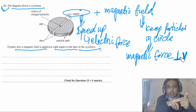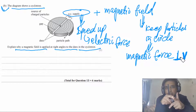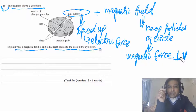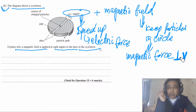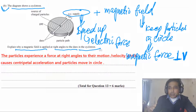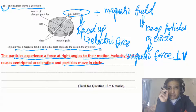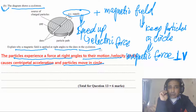The magnetic force must be perpendicular to the particle's velocity to cause circular motion. Using Fleming's left-hand rule: if velocity is horizontal, the magnetic field must be perpendicular (out of or into the dees). The magnetic force cannot increase speed because it always acts perpendicular to velocity — only direction changes, not speed.